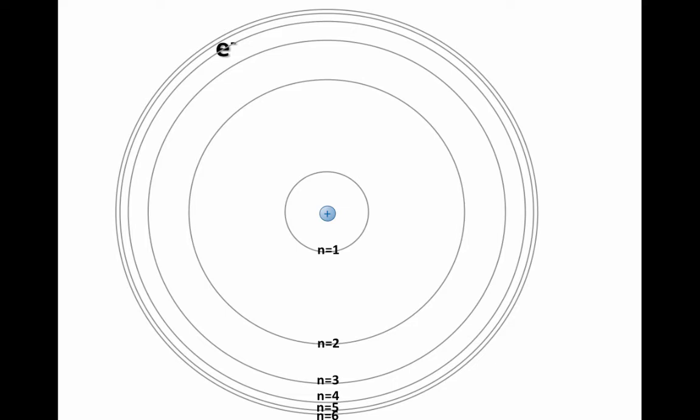Where does that excited electron prefer to be? That's right. It wants to be in n equals 1, the ground state. And so it will fall back down to the relaxed state where it began. Will this process be endothermic or exothermic? Correct. This is exothermic because energy was given off.